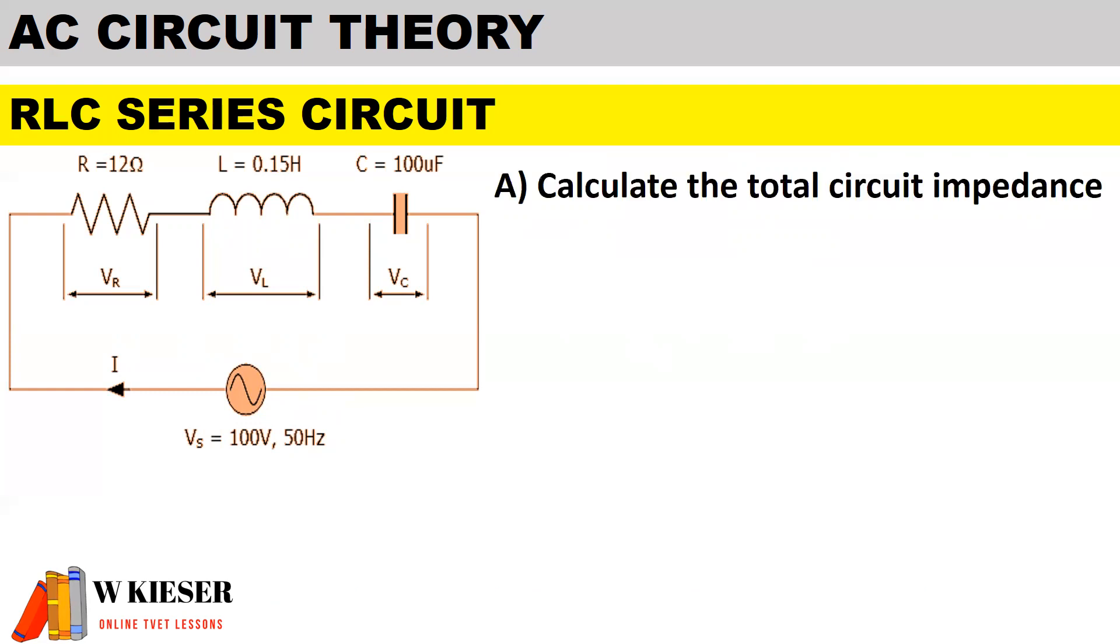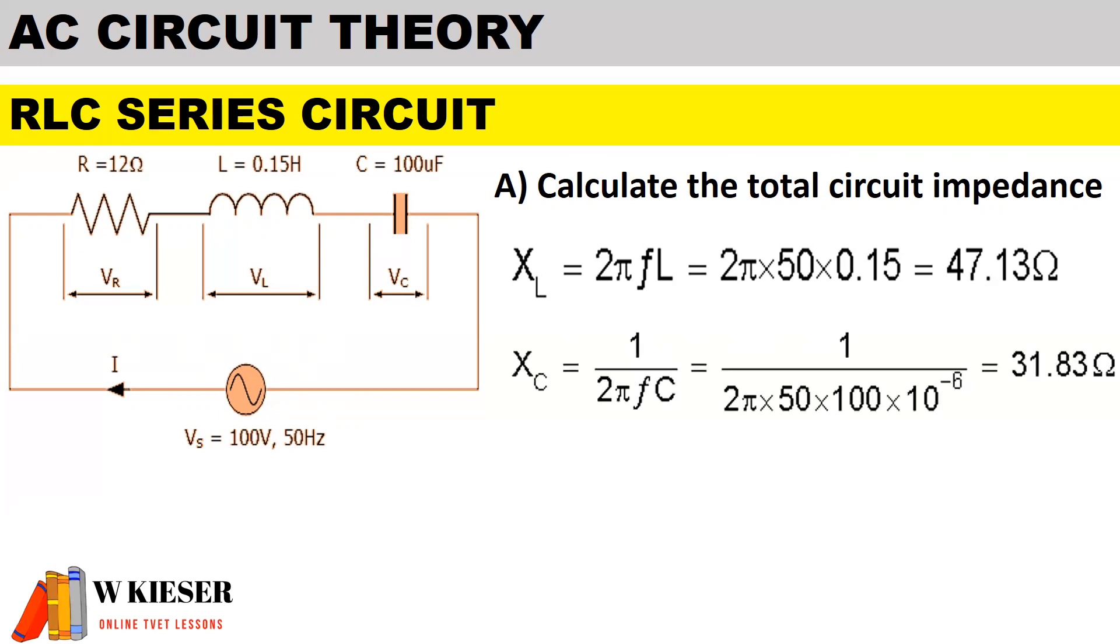Before we can determine the impedance, we first have to calculate the inductive reactance, which is 2 times pi times the frequency times the inductor of 0.15 Henry and therefore we get 47.13 ohms. To calculate the capacitive reactance is 1 over 2 pi fc. Therefore 1 over 2 pi times 50 times 100 times 10 to the minus 6 to convert microfarad to farad. Therefore the capacitive reactance is 31.83 ohms.